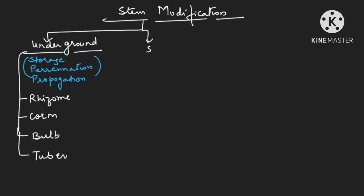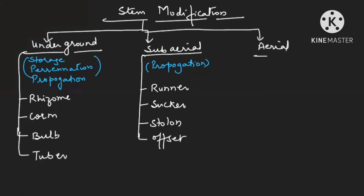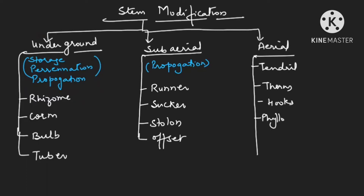The second category is subarial stem modification, whose main work is only propagation, which includes runner, sucker, stolon, and offset. The third category is aerial stem modification, which includes tendrils, thorns, hooks, phylloclade, and cladode.